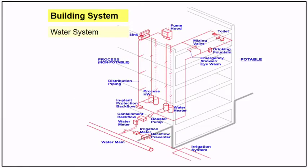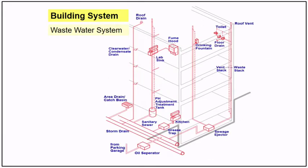For the water system, a PM strategy, PM services, preventive maintenance activity, defined frequency, and routine inspection are also needed for the following: pump systems, valves, pipes, meters, drains, and any attached related equipment. For the wastewater system, which all buildings have, a PM strategy, PM services, PM activity, defined frequency, and routine inspection are needed for treatment systems, pump systems, and kitchen grease traps.